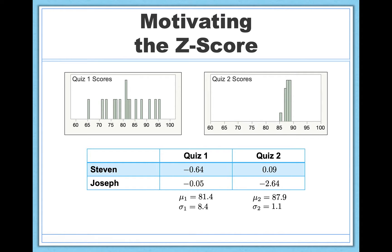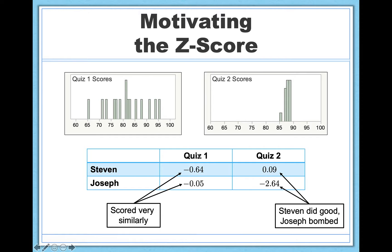It's much less complicated a question now in terms of who's doing better. For quiz 1, Stephen and Joseph did relatively similarly: Stephen did 0.64 standard deviations below the mean, and Joseph did 0.05 standard deviations below the mean — both pretty close to the mean. On quiz 2, Stephen was still pretty close to the mean, but Joseph, relative to his peers, did very, very poorly — almost three standard deviations below the mean, which is quite poor. So I would say that Stephen is probably doing better overall in the course. This is the power of the z-score.